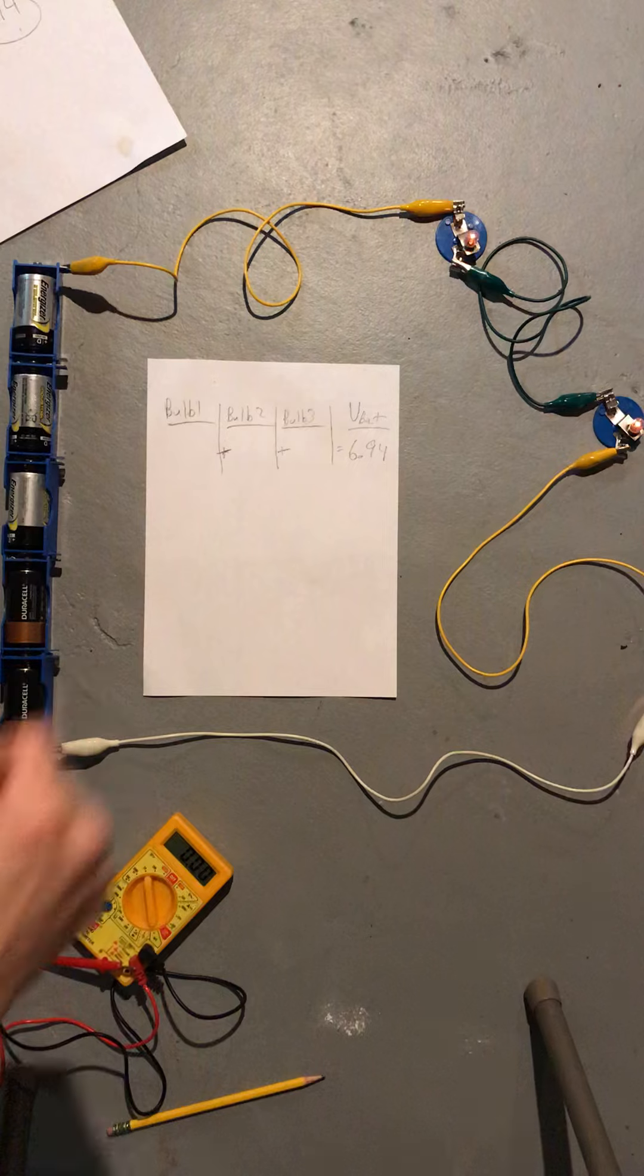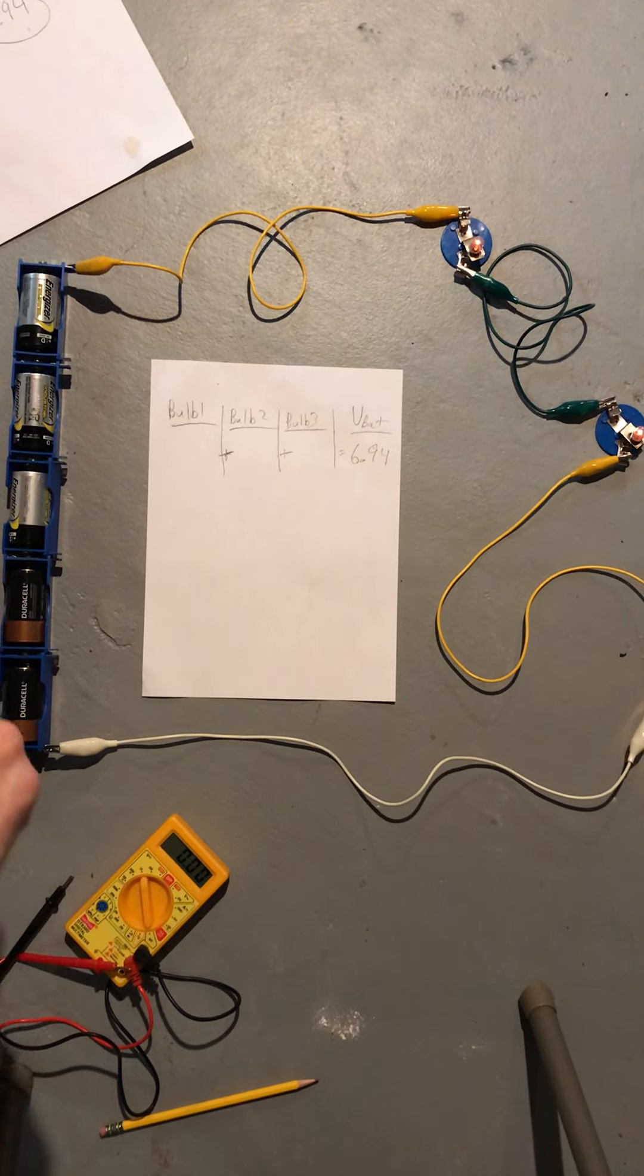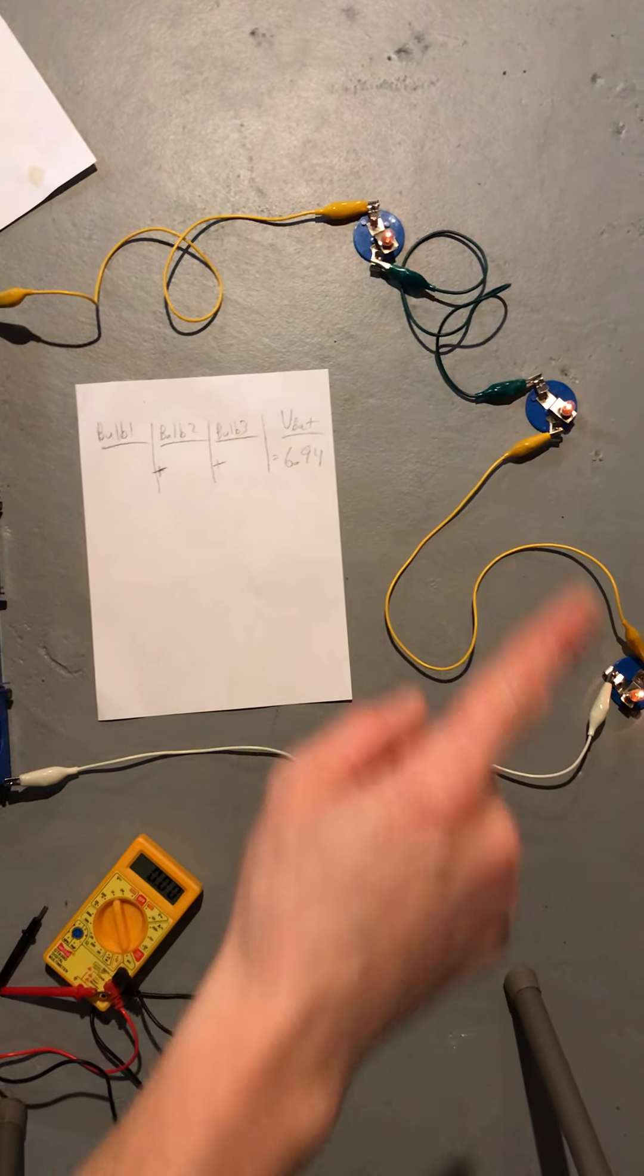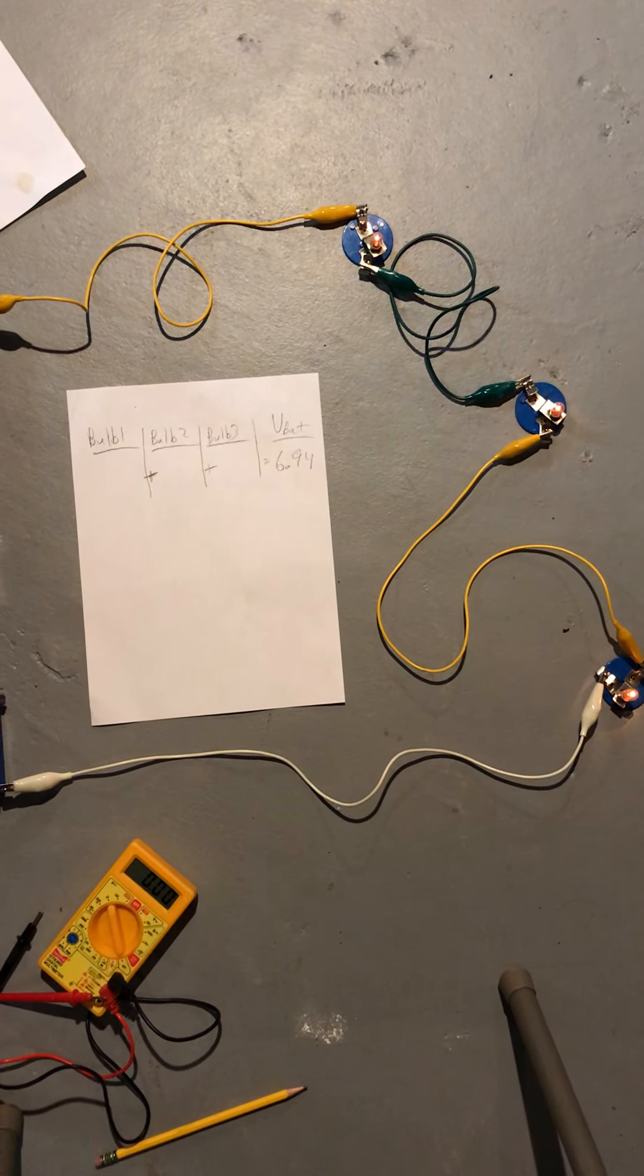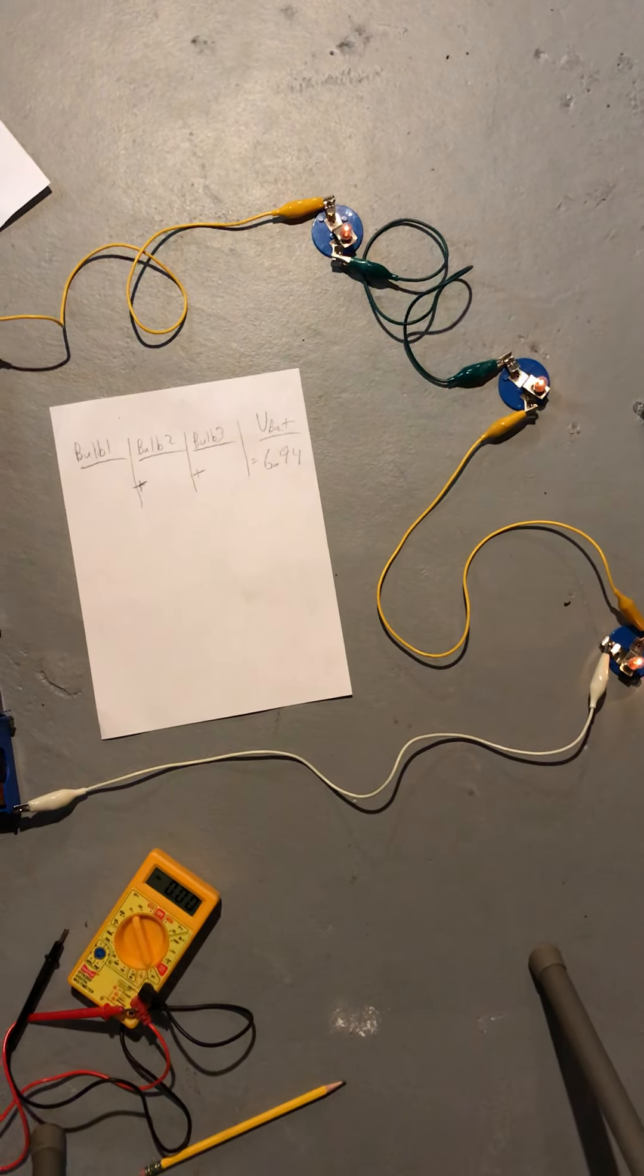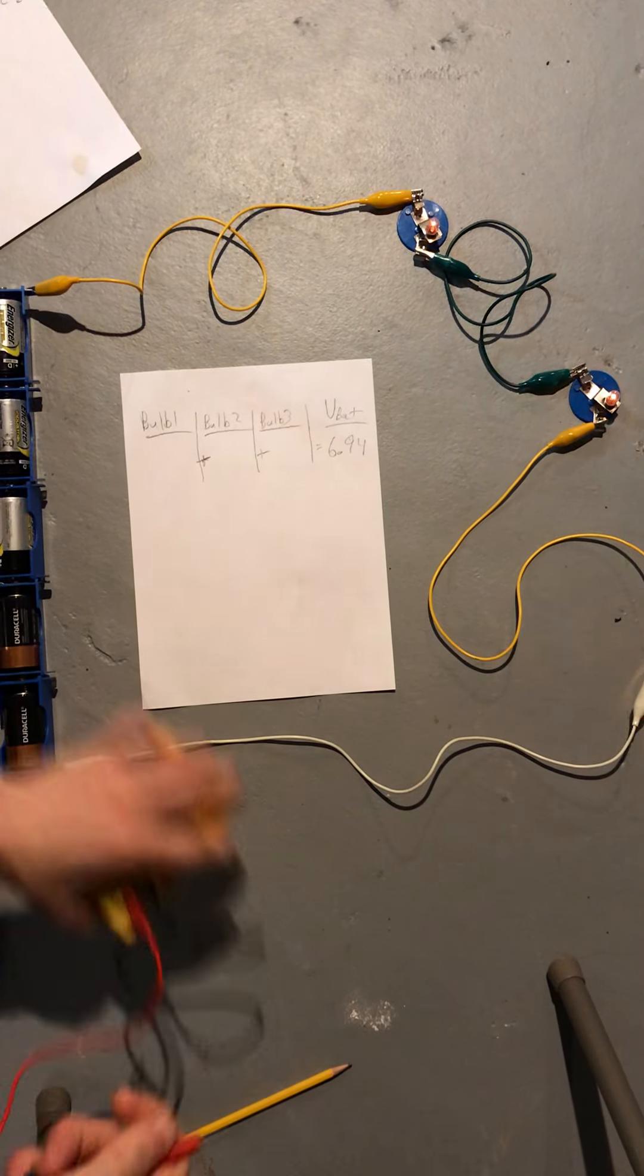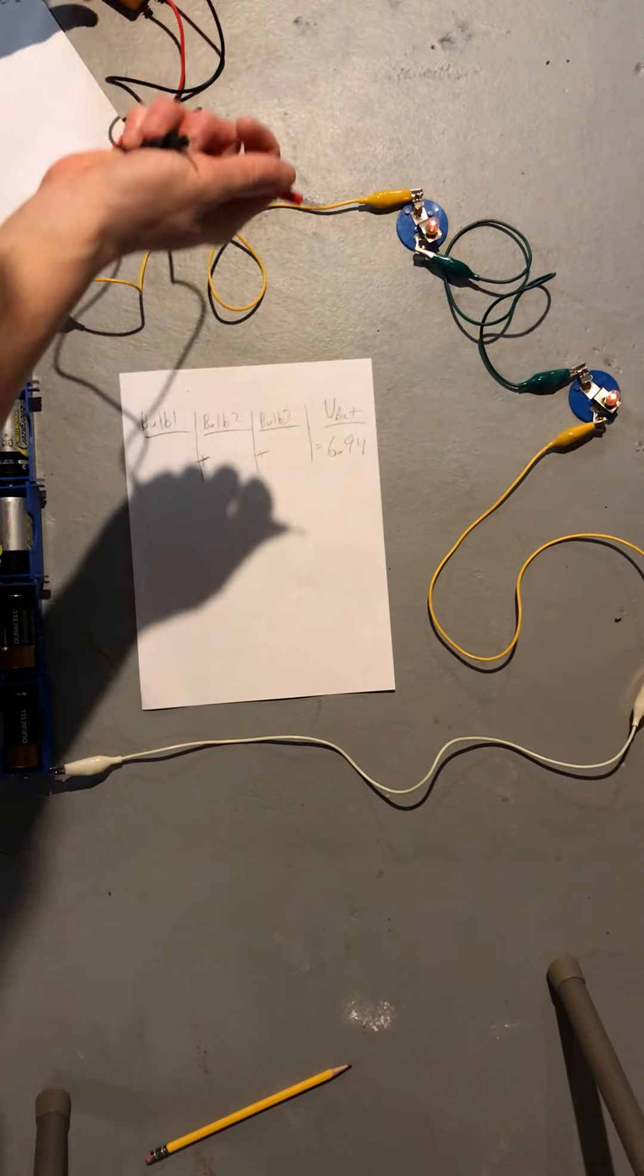That needs to be split up, so maybe 2.5, 2.5, 2.5 will add up to 6.94 because now there's three bulbs. That's what I'm expecting. Let's measure the voltage at each bulb and see if that happens.